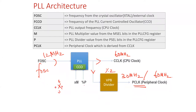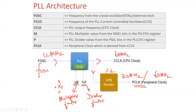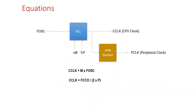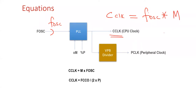The two important values you have to understand are the multiplier factor M and the divider factor P. These are used to appropriately configure the PLL to generate 60 MHz. The first equation is: CPU clock (C-clock) = F-oscillator × M, where M is the multiplier factor. Whatever multiplier factor you choose, multiplied by F-oscillator, gives you the CPU clock.